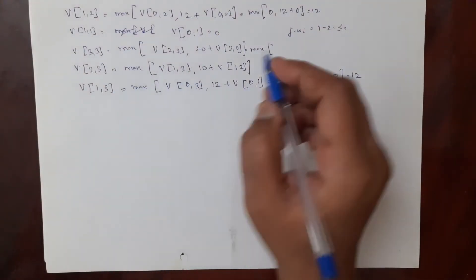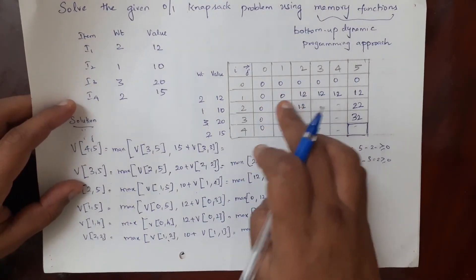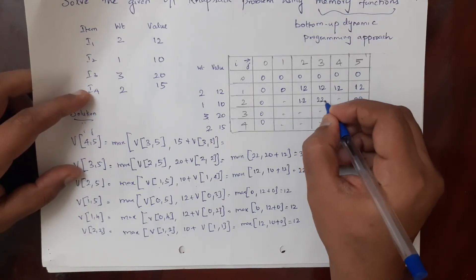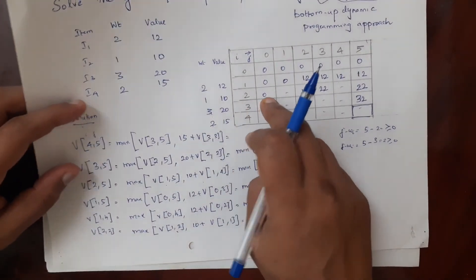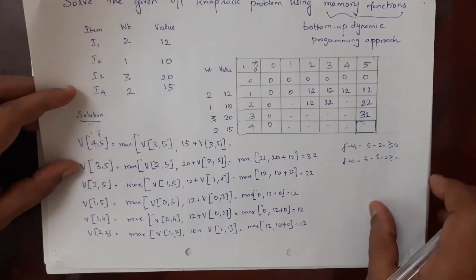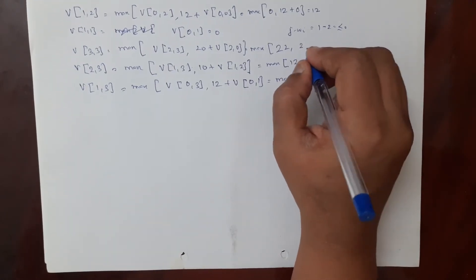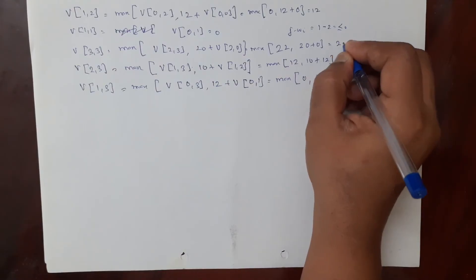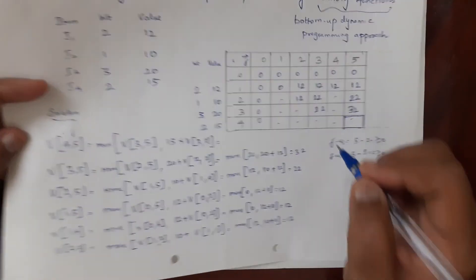Now v(2,3) = maximum of v(1,3) = 12, or 10 plus v(1,2) = 12, giving maximum of 12 or 22. So v(2,3) = 22. We fill entry 2 comma 3 with 22. Now for v(3,3): maximum of v(2,3) = 22, or 20 plus v(2,0) = 0. So the maximum is 22, and v(3,3) = 22.